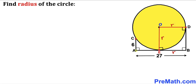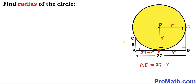Now we observe that the whole side length AB is 27 units and EB is r, so the remaining side length AE is going to be 27 minus r. Thus, AE = 27 − r.